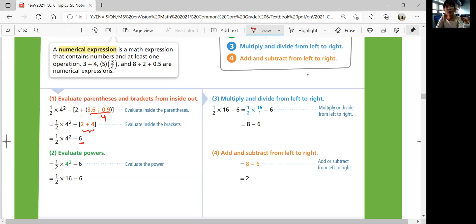So then what's next? Powers. Solve powers. 4 squared is equal to 16. And then you multiply and divide from left to right. So 1 over 2 times 16 would be 16 divided by 2, which is 8.